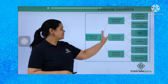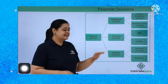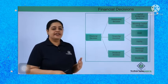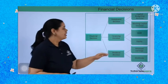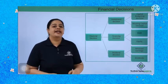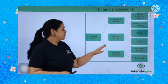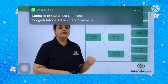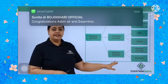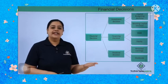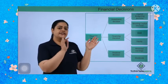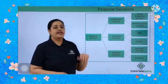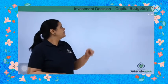There are three decisions you have to make: investment decision, financing decision, and dividend decision. The investment decision is about how much fixed assets you want in your business — that is the capital budgeting decision — and how much working capital you require. In financing decisions, you decide the proportion of funds from debt and equity. In dividend decisions, you decide how much profit to retain as retained earnings and how much to distribute as dividends to shareholders.